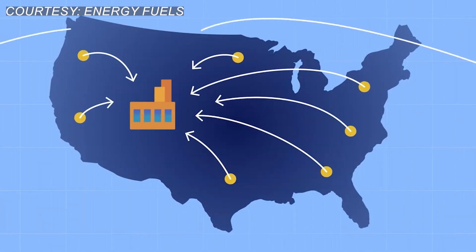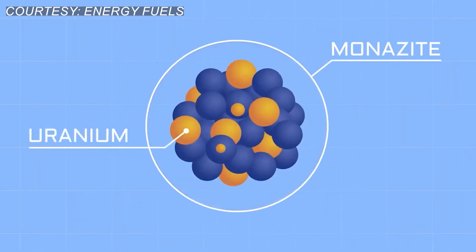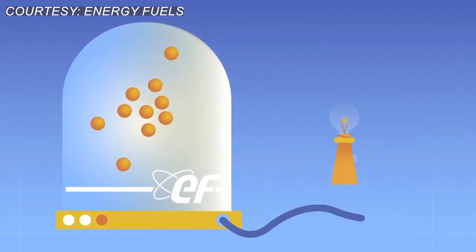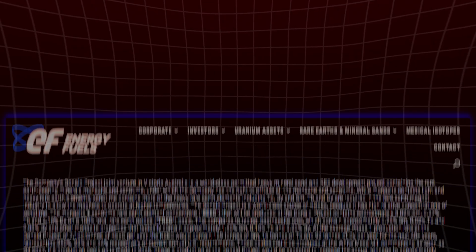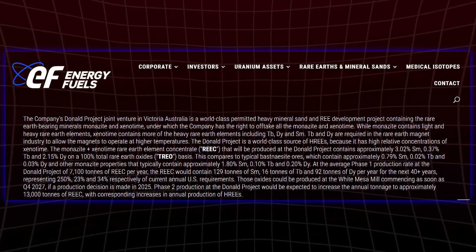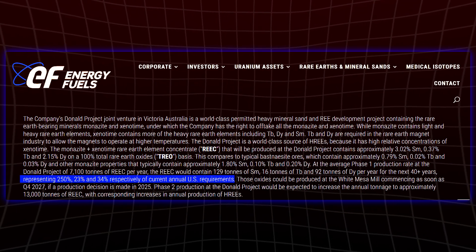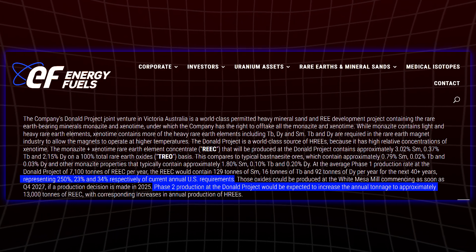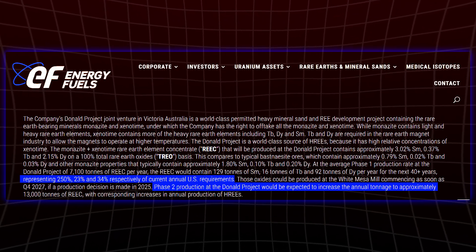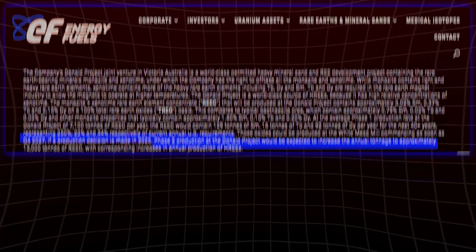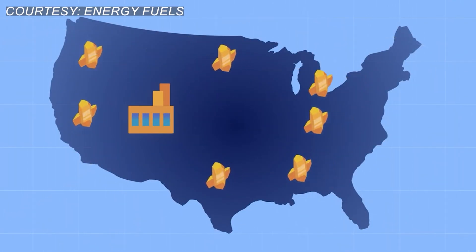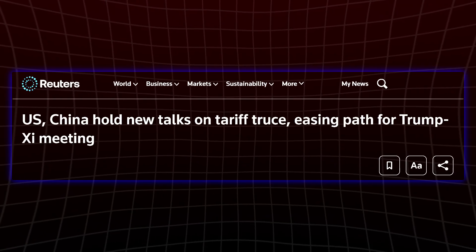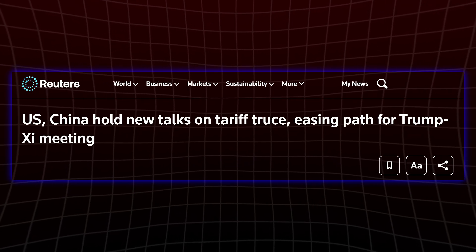Their White Mesa Mill in Utah is one of the few facilities in North America with the infrastructure to do this at scale. Their plan doesn't stop at dysprosium. Energy Fuels is aiming to ramp up production of terbium and samarium later this year, and by the end of phase two, they expect to produce over 250 percent of U.S. annual demand for certain rare earth elements. That could significantly reduce American dependence on Chinese supply chains, something both political parties are now urgently trying to solve.